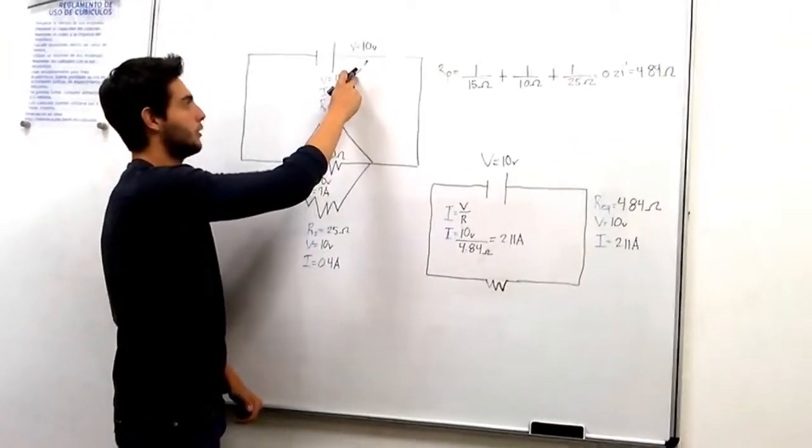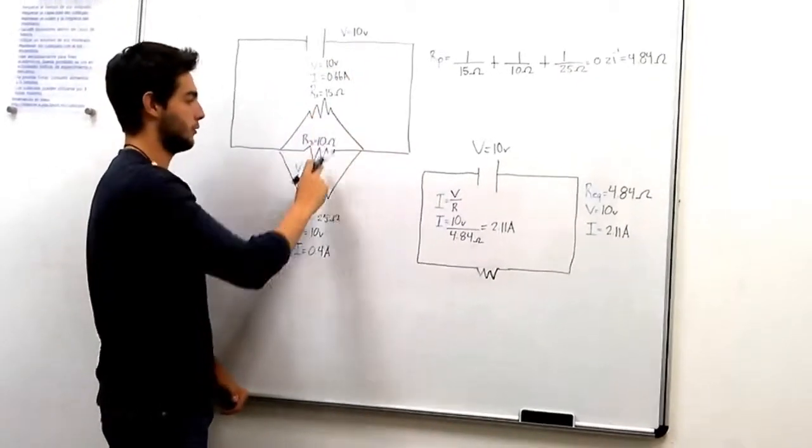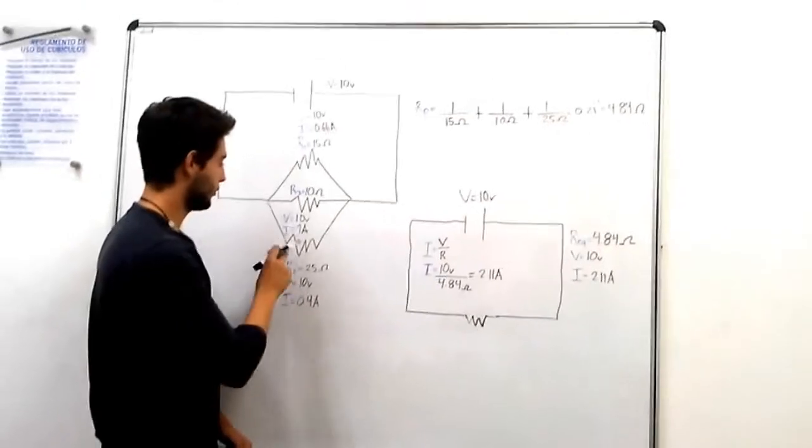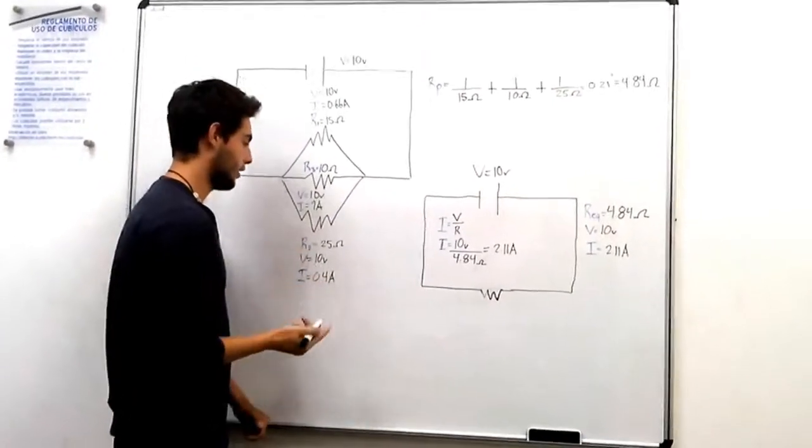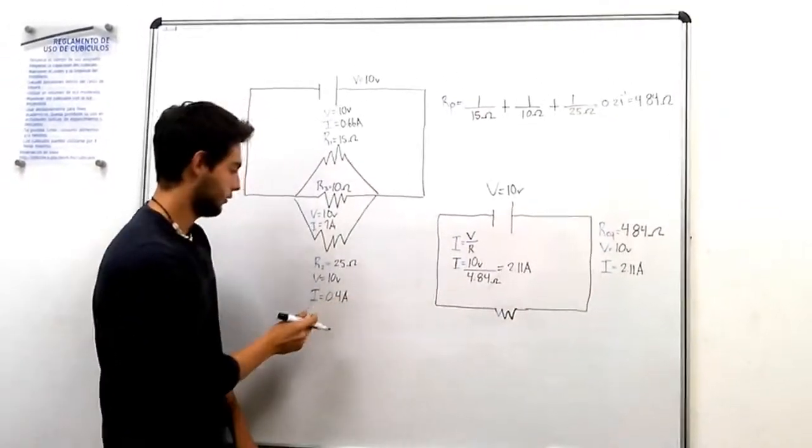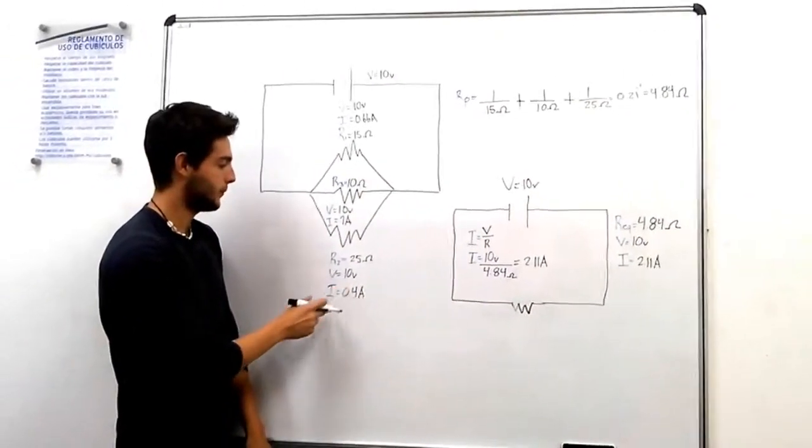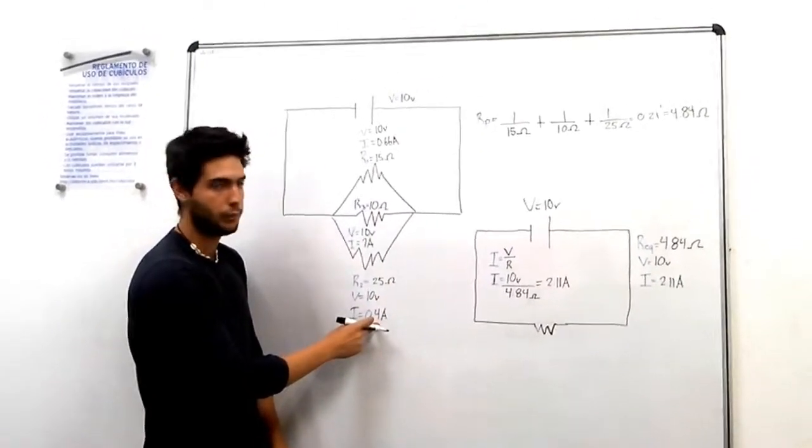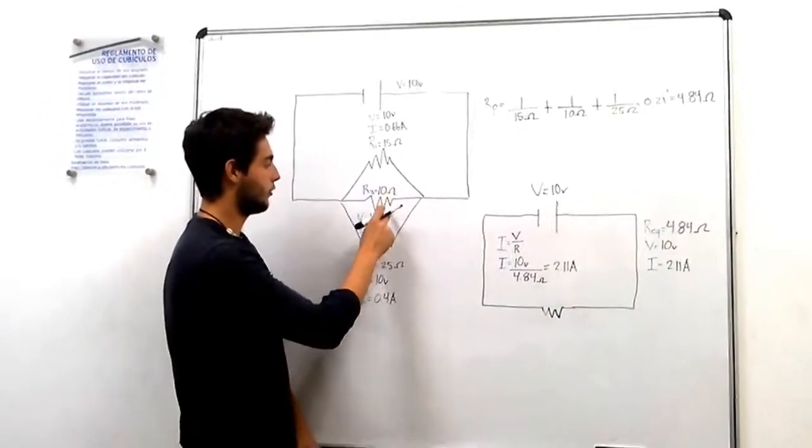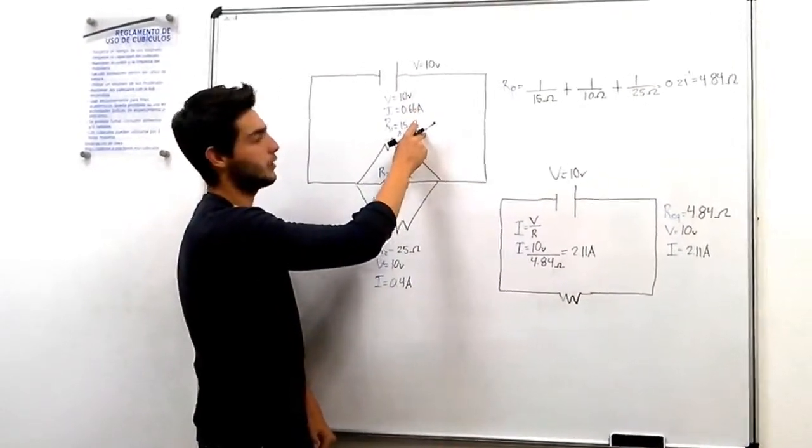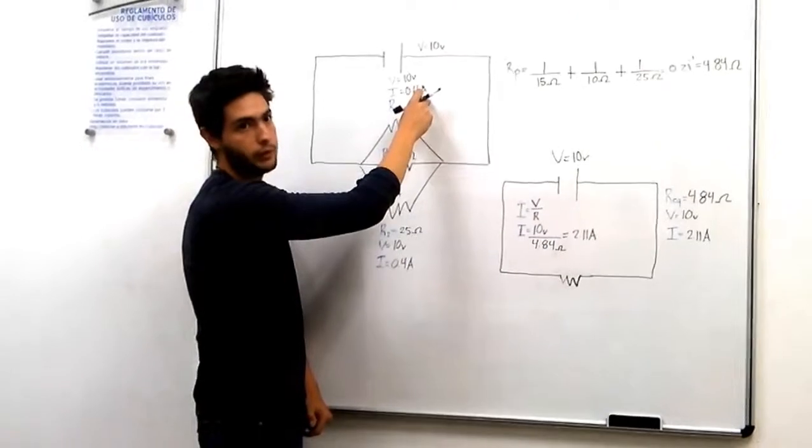So voltage is going to be equal to 10 volts in each of these currents. Then we have left to find the current and remember that current is equal to voltage over resistance. So we perform the operations: 10 volts over 25 gives us 0.4 amperes, and 10 over 15 gives us 0.66 amperes.